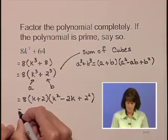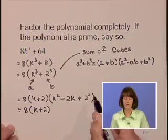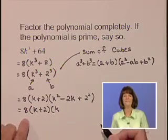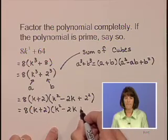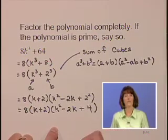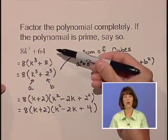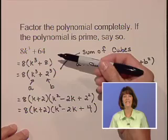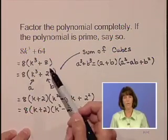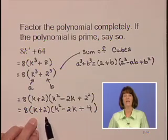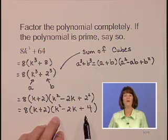Let's take one more step. Clean this up a little bit by squaring that 2. So this becomes 8 times k plus 2 times k squared minus 2k plus 4. We can check by multiplying back, ensuring that we get the original polynomial. I think you'll find that we will indeed get that. And then we do have the completely factored form of 8k to the third plus 64. It is 8 times k plus 2 times k squared minus 2k plus 4.